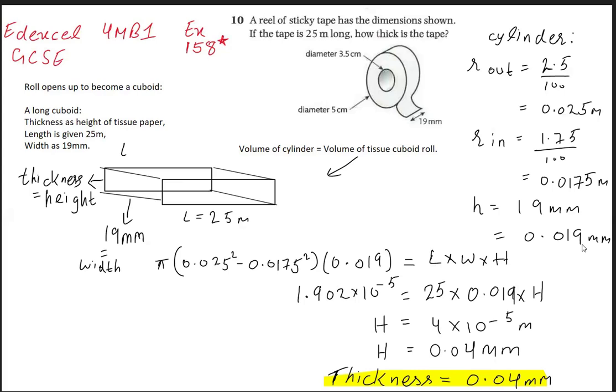You can equate the volume of the cylinder as equal to the volume of the cuboid. The thickness you can keep it as h. Height can be the thickness, and height turns out to be 0.04 millimeters.